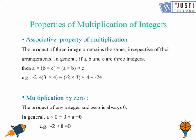Let's move on to the next property, which is associative property of multiplication. The product of three integers remains the same irrespective of their arrangements.